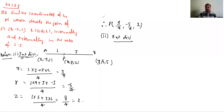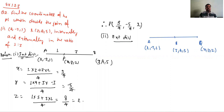Next hai hamara external division ka laga rahe hain. A, B, yeh ho gaya Q. A ka coordinate hai (2,-3,1), B ka (3,4,5), Q ka coordinate ho gaya (X,Y,Z). Same formula, bas beech mein minus lag jayega. To X equal to (1×3 - 3×2) upon (1-3) = (3-6) = minus 3 upon minus 2 = 3/2.